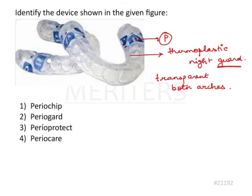The first option we might get drawn to is Perio Guard, because there is 'guard' in it too. So now let's try to break down the options. Option A: Perio chip.